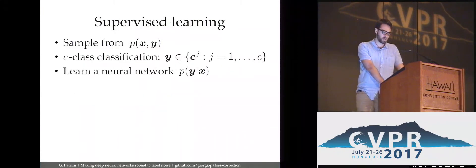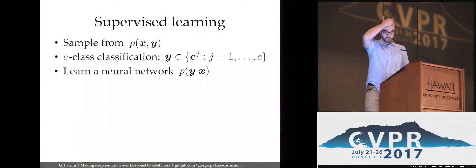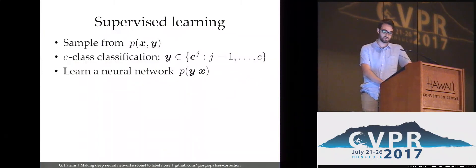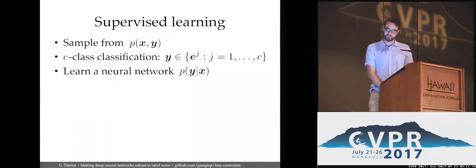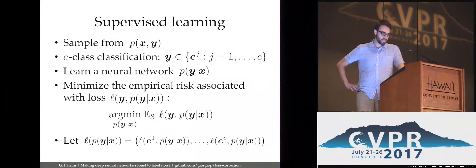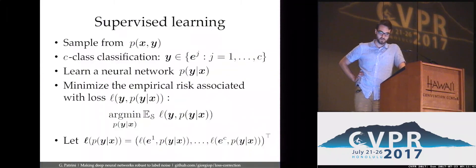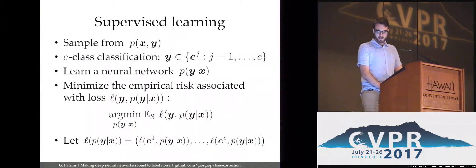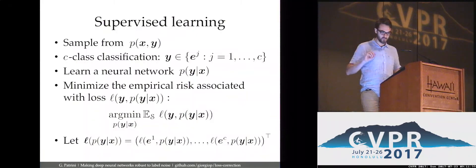Just to quickly recap some useful notation: our samples come from a distribution P of X and Y, where we encode labels as indicator vectors. Our objective is to train a neural network that approximates the conditional distribution of Y given X. We do that by minimizing the empirical risk associated with a loss function — L might be the cross-entropy or a square loss. We also define a vector loss, where you compute the loss on any possible ground-truth value of the label and put it in a vector.